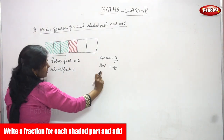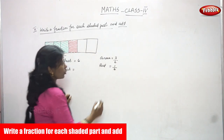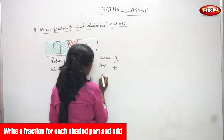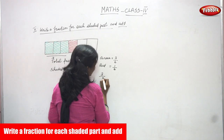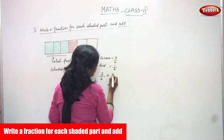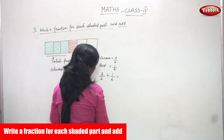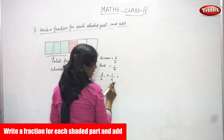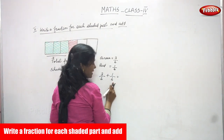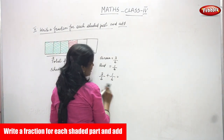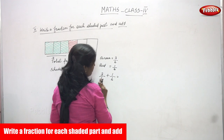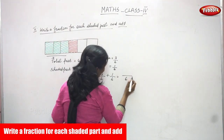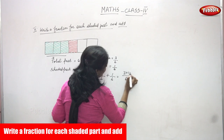Now we are going to add: three by six plus one by six. Because the question says write a fraction for each shaded part and add. First, look at the denominators — both denominators are the same, so you add the numerators and write the denominator only one time.